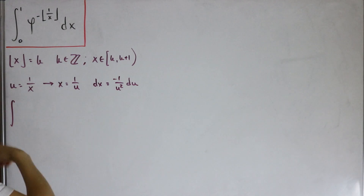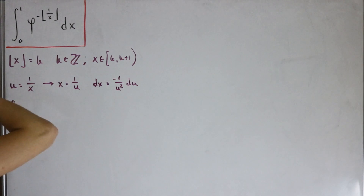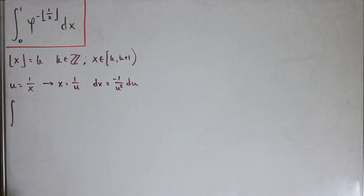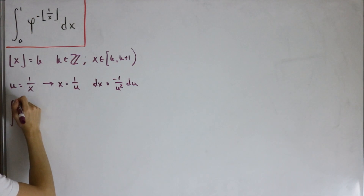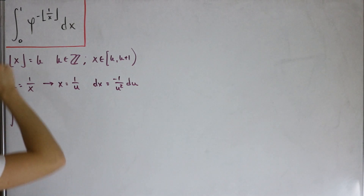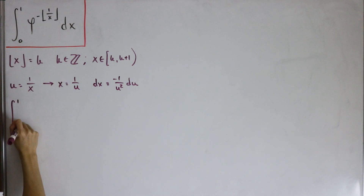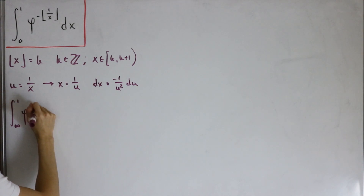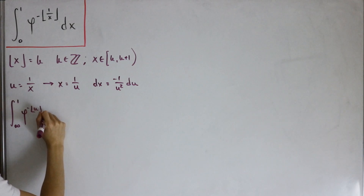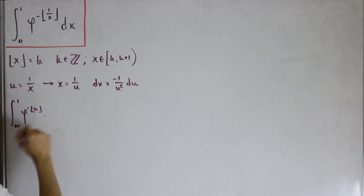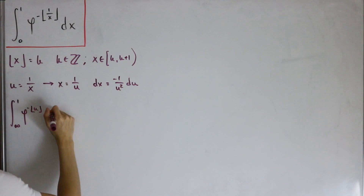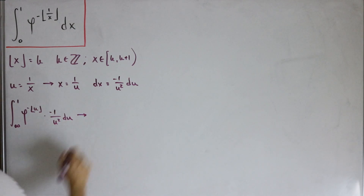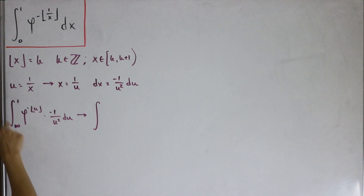Putting this back together with the new variable in terms of u, and plugging in our bounds: when x = 1, we get u = 1; when x → 0, u approaches positive infinity. So we now have φ to the power negative floor(u), and substituting the differential dx gives us -1/u² du.